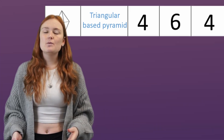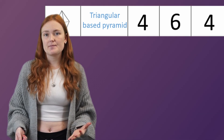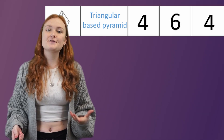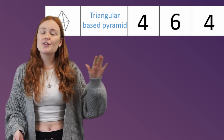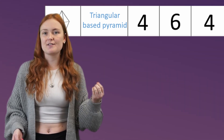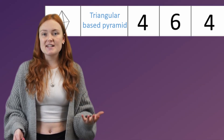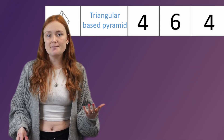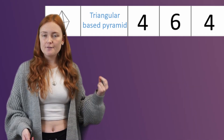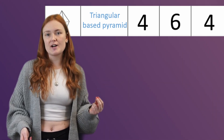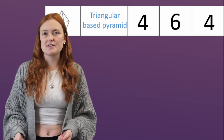Finally we have a triangular-based pyramid. That one has 4 faces because it's got a triangular base and then 3 triangles that form up to make the pyramid. It's got 6 edges and only 4 vertices — 3 corners for the triangle base and 1 to make the very point at the top.